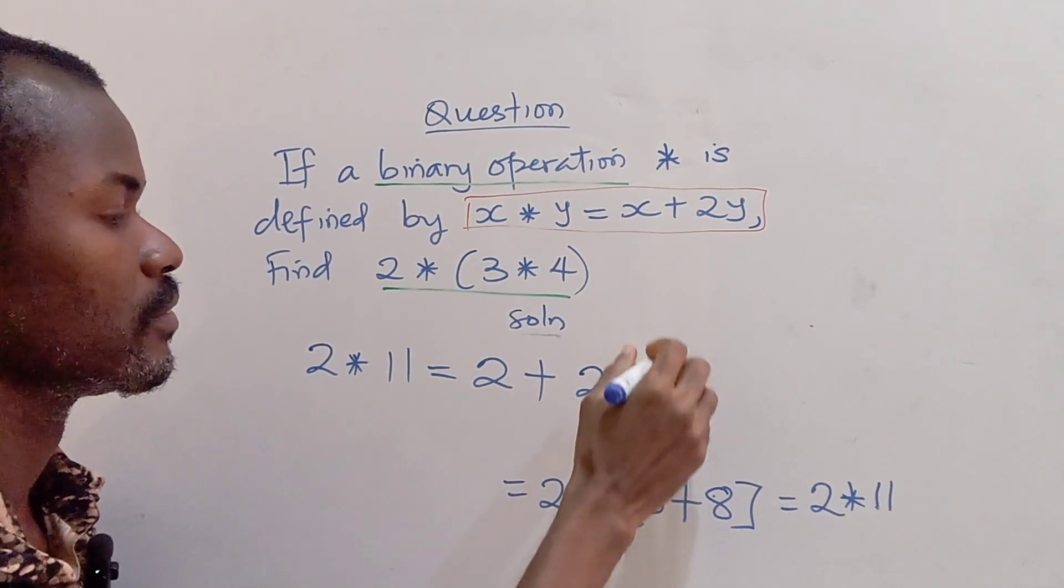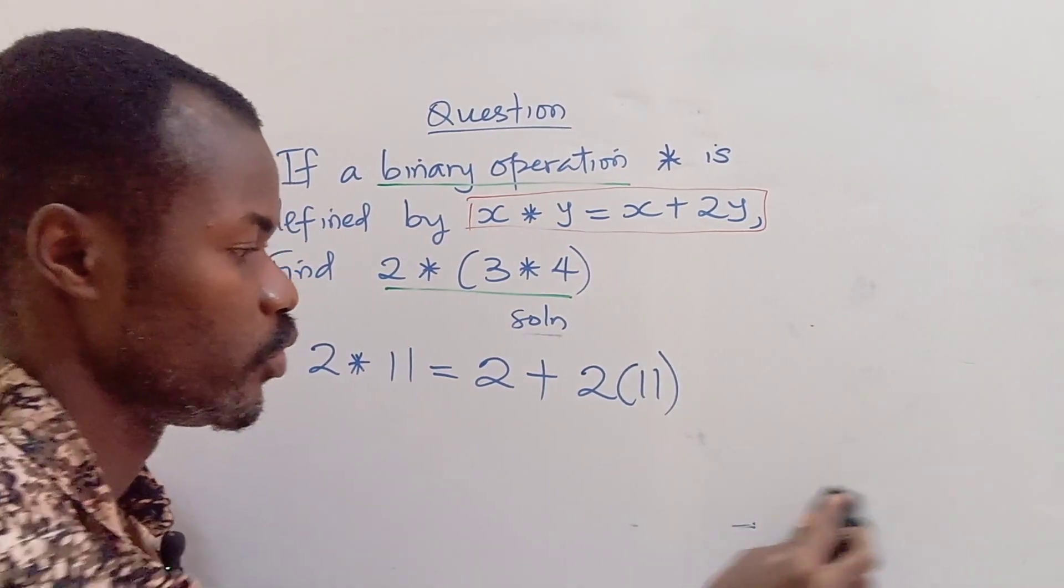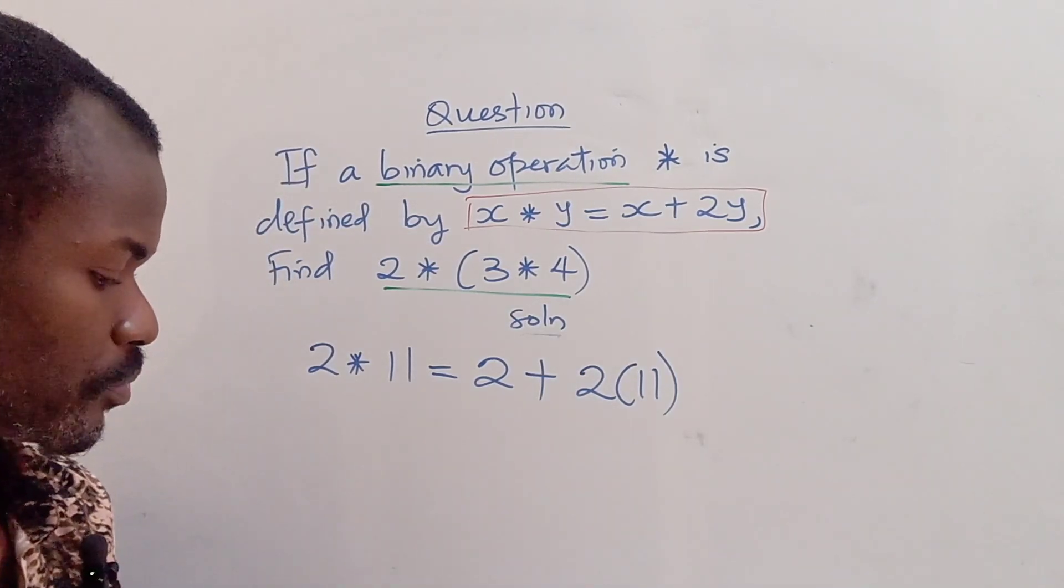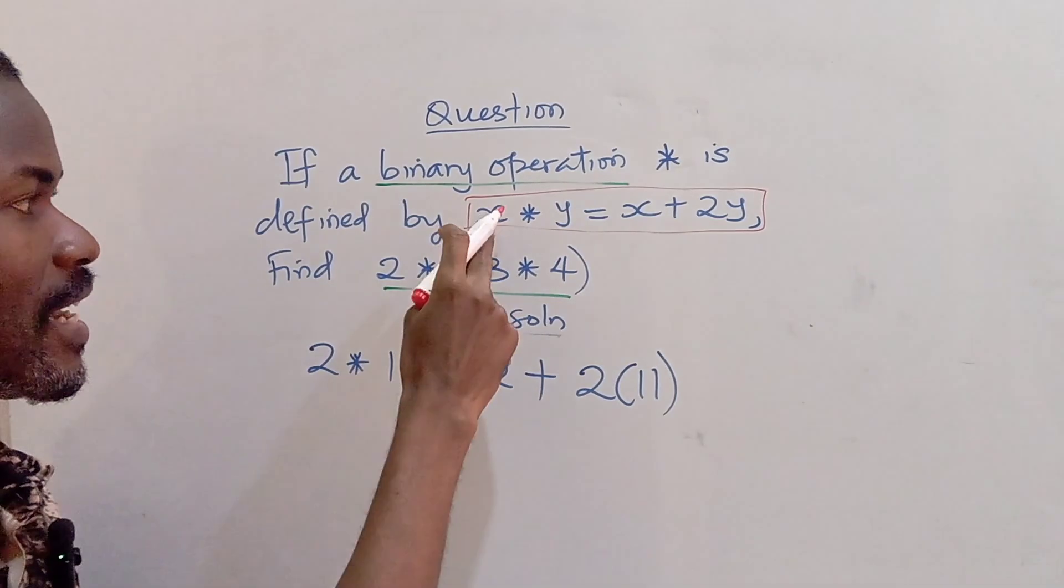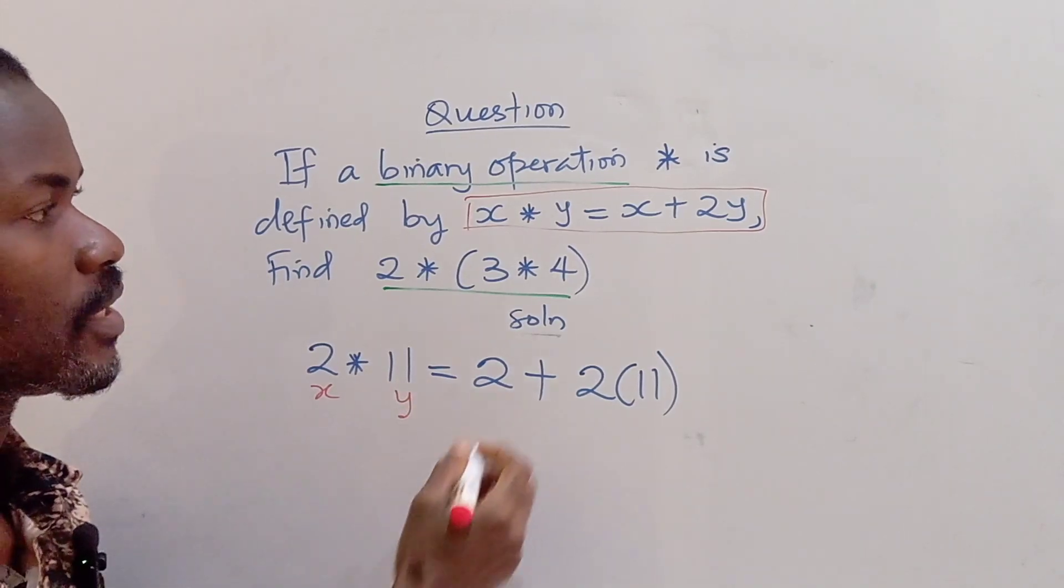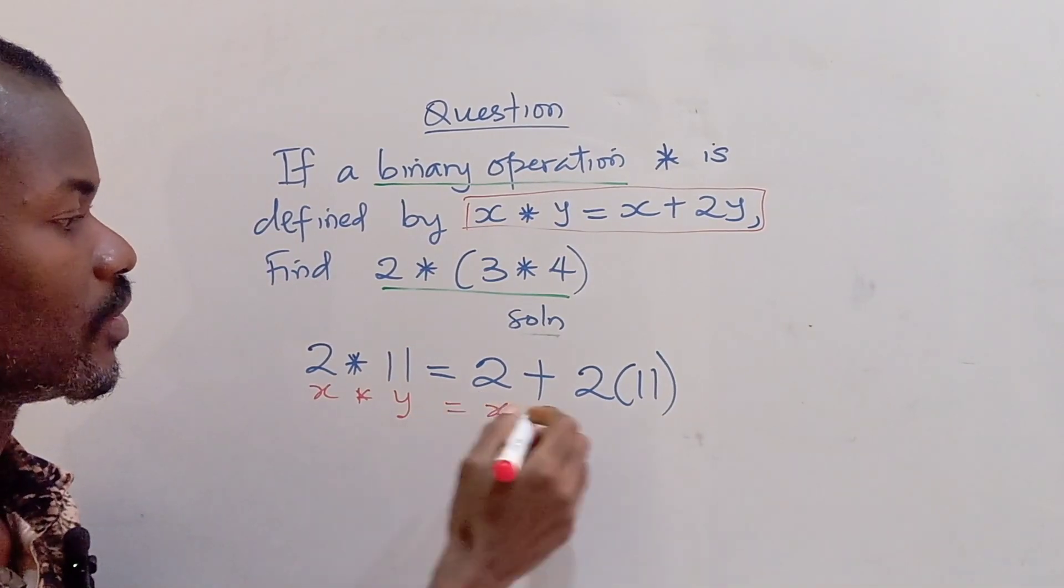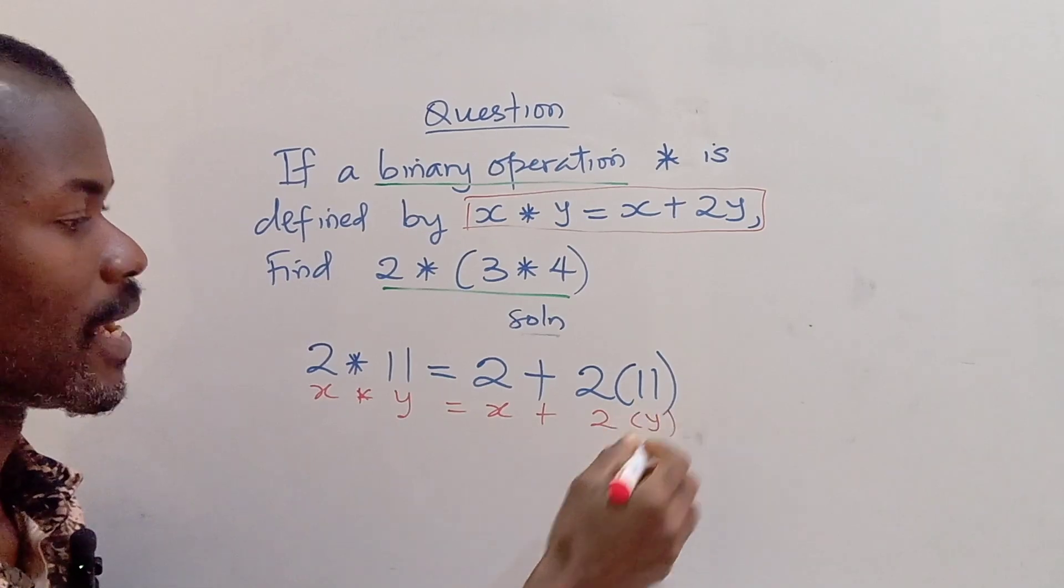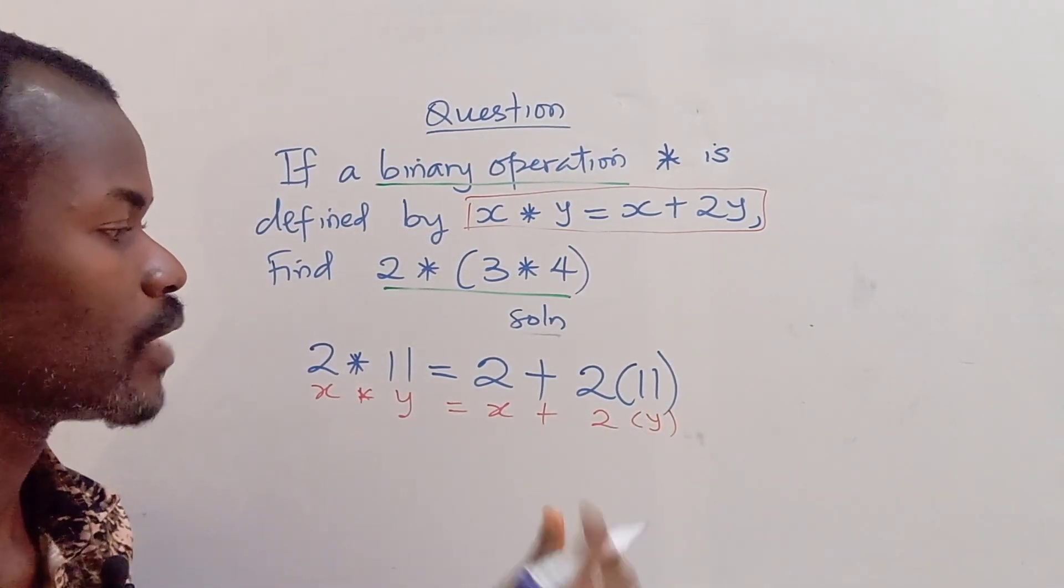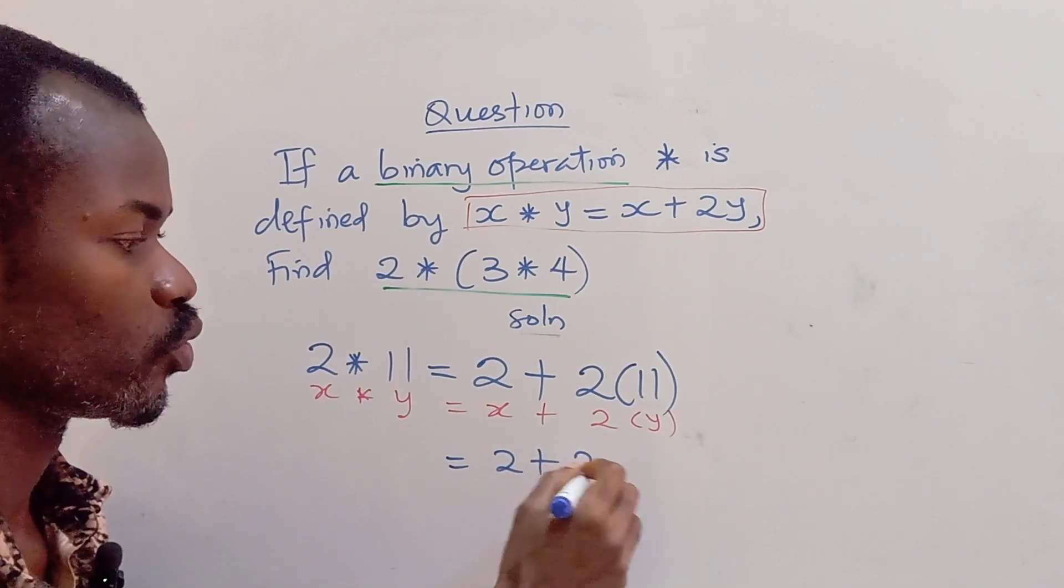So I'm going to write 2 plus 2 times 11. Remember you are always using the binary operation that you've been given. From the operation, x is 2 and y is 11, and we have it as x plus 2 times y. So 2 times 11 is going to give us 22.